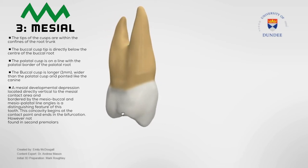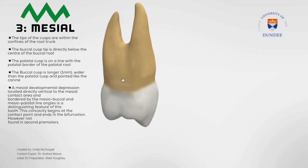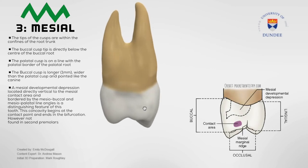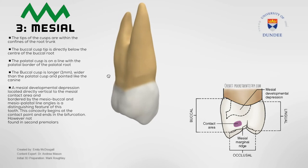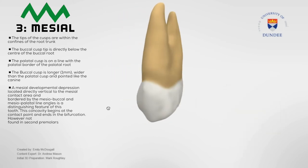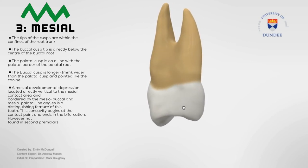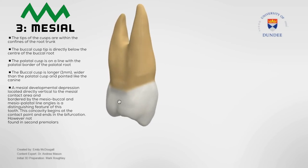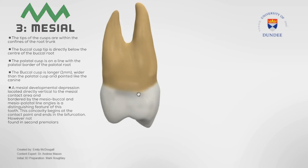This concavity, which starts from the contact area and ends at the bifurcation, is special to the mesial side of the maxillary first premolar and is a key feature that can help you distinguish between what premolar you're working with. If you look at the distal view, the distal view is more convex whilst the mesial view is more concave, giving you that obvious mesial developmental depression to help you distinguish what premolar you're working with.